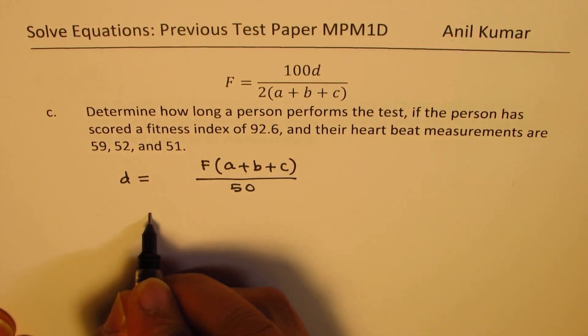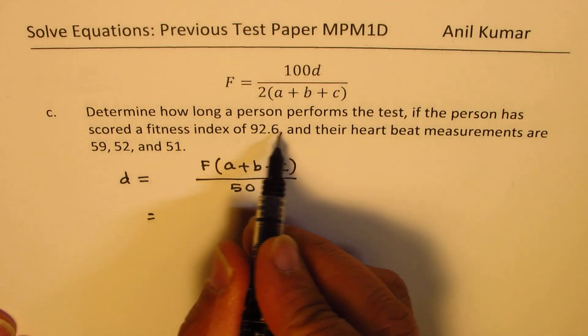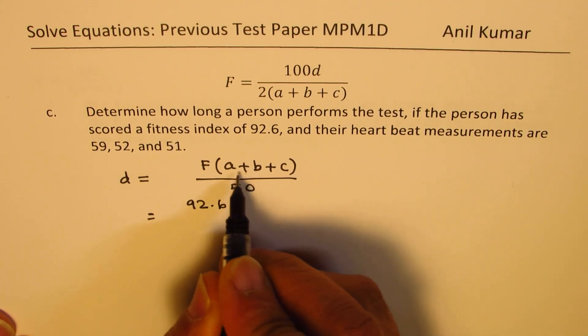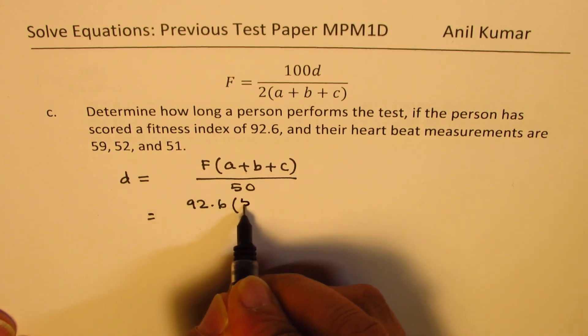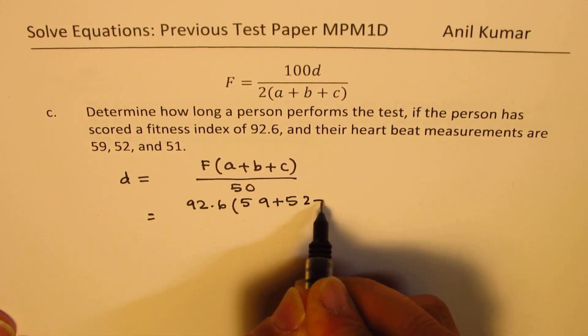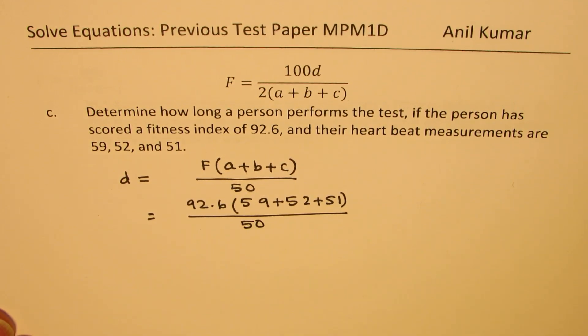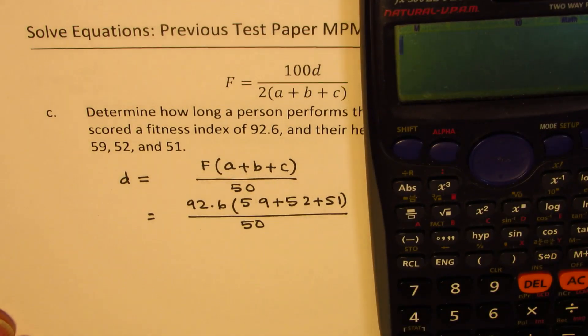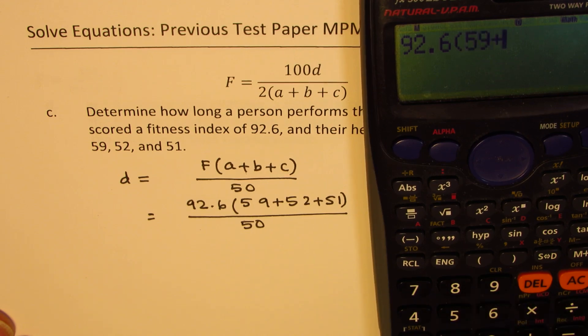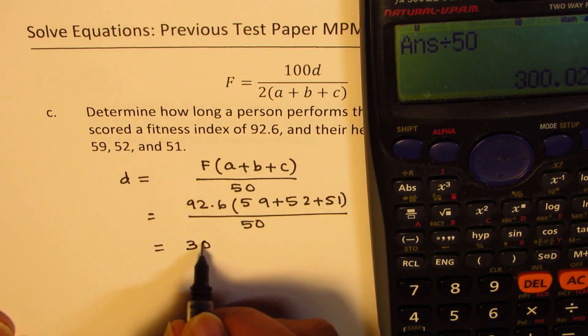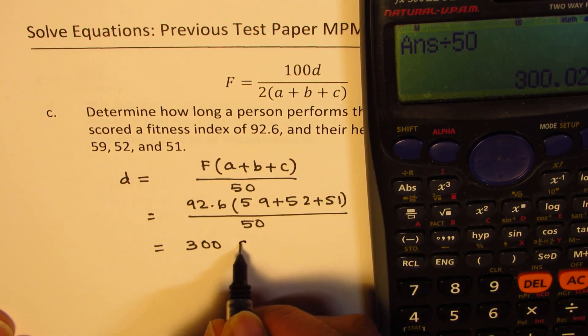This is one way to do it. So F is given to us as 92.6 and the three ratings are 59 plus 52 plus 51. So let's calculate 92.6 times (59 plus 52 plus 51) divided by 50, and the decimal equivalent is equal to 300. So 300 seconds.